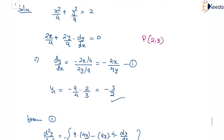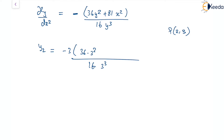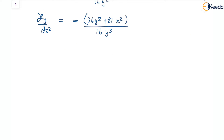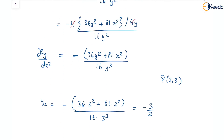We need to evaluate this second derivative at the point (2,3). So y2 equals minus (36 times 3² plus 81 times 2²) divided by (16 times 3³), which gives minus 3/2. Interestingly, both the first derivative y1 and the second derivative y2 at point p are equal to minus 3/2.